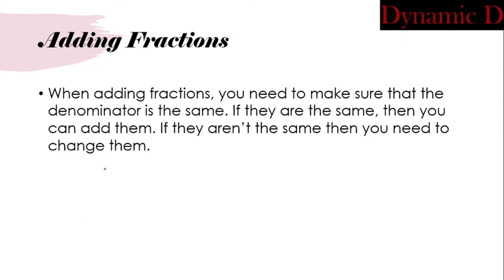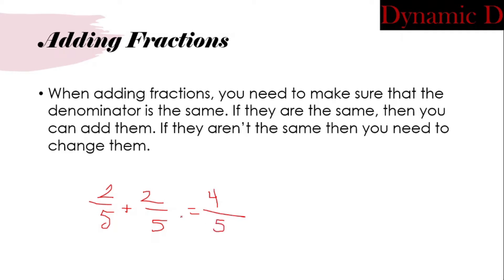So, let's start off with the first part. You need to make sure they're the same, and if they are the same then you can add them. Let's talk about two-fifths plus two-fifths. If the denominator is the same, we don't add the denominators — we keep them the same. So we add two plus two is four, and then we keep the denominator of five. Two-fifths plus two-fifths equals four-fifths.